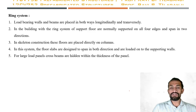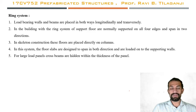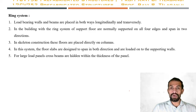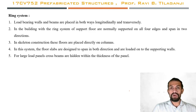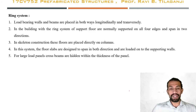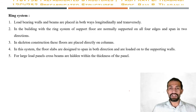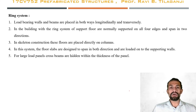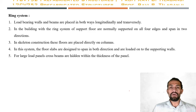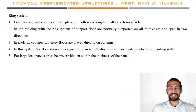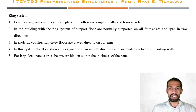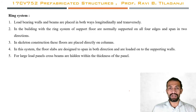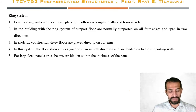In skeleton construction, floors are placed directly on the columns. Floor slabs are designed to span in both directions and are loaded on the supporting walls at the ends. For large load panels, cross beams are hidden within the thickness of the panel. The ring system spans in both longitudinal and transverse directions, with floor slabs normally supported on four edges or directly on columns provided at corners or intermediate positions.